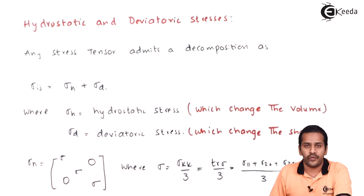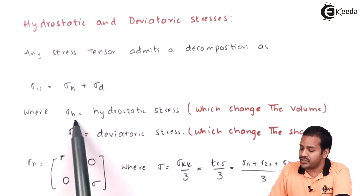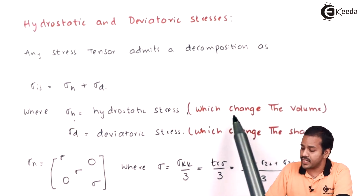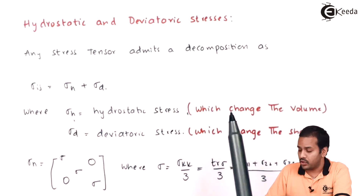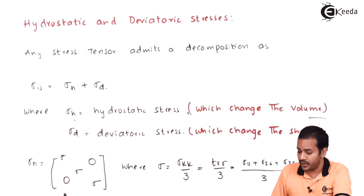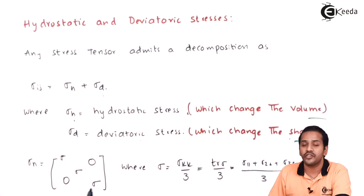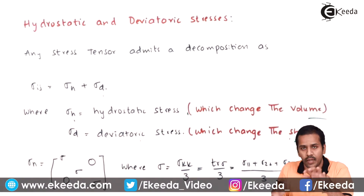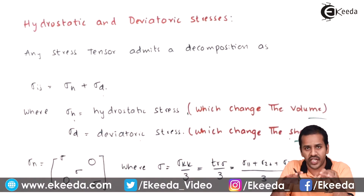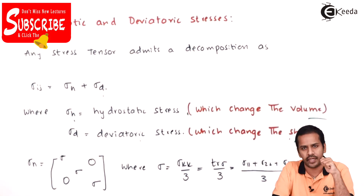We are dividing the stress components based on the physics. The hydrostatic stress is the component which changes the volume of the specimen, and the deviatoric stress is the component which changes the shape — it distorts the element.